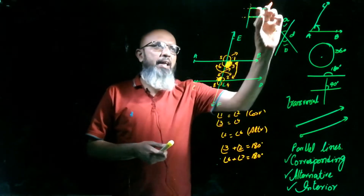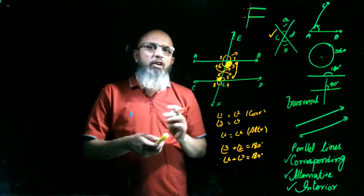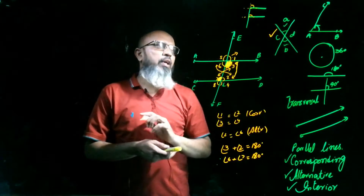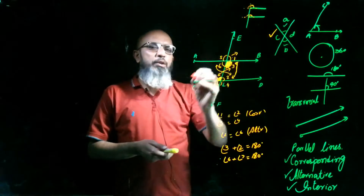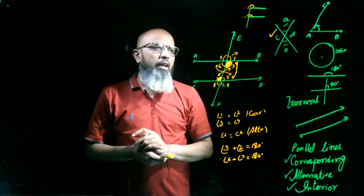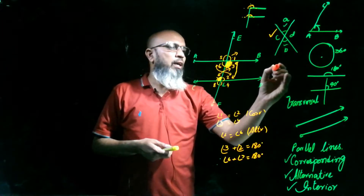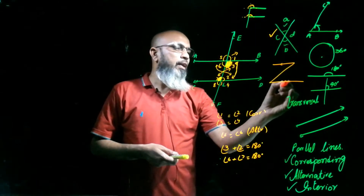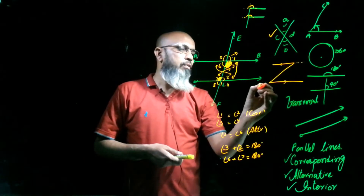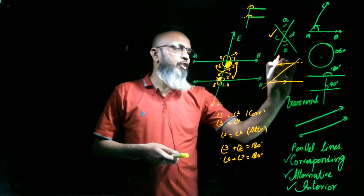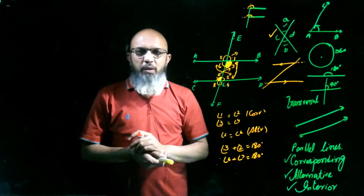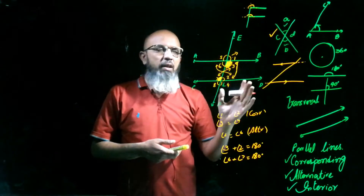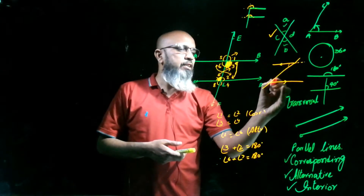So the transversal cuts the two parallel lines in the letter F. The angles formed are corresponding angles. Similarly, if I draw the letter Z, these two lines are parallel and the diagonal is your transversal. The angles formed in the letter Z are alternate angles.